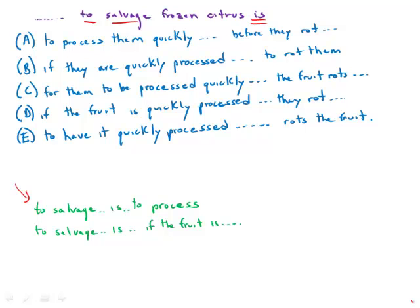'To salvage is to process' with another infinitive after 'is,' or 'to salvage is if the fruit is' or 'if they are' an if clause. As you might suspect, what is better is having a parallel structure - having an infinitive before the verb 'is' and after the verb 'is.' So this is actually correct and this is technically incorrect.